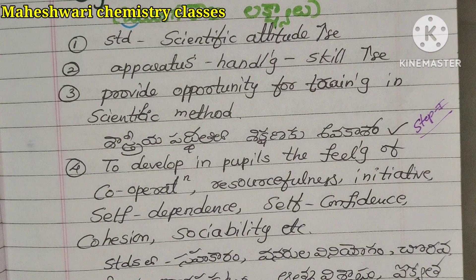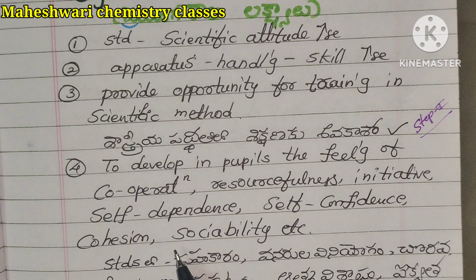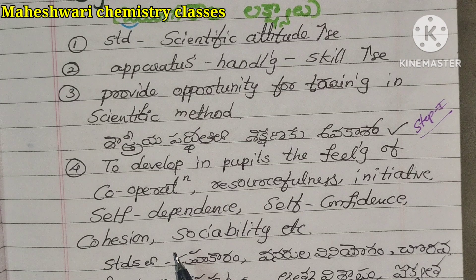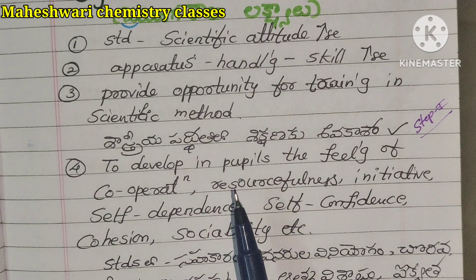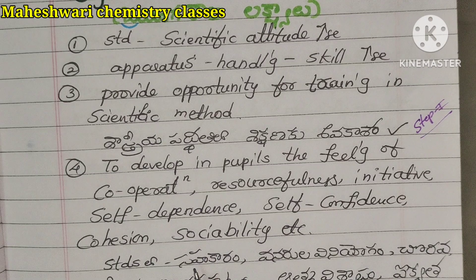Sociability. School is a small society — this is called a mini society in the world. A school or college has different sectors and different mentalities. It is a society, and the laboratory helps develop social qualities.